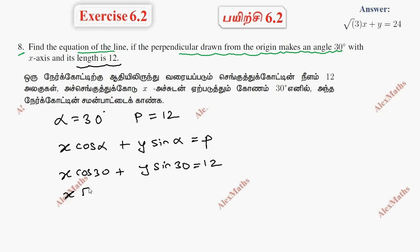This is x into root 3 by 2 plus y into 1 by 2 equals 12. Taking LCM, root 3x plus y whole divided by 2 equals 12. Cross multiplying, the line is root 3x plus y equals 24.